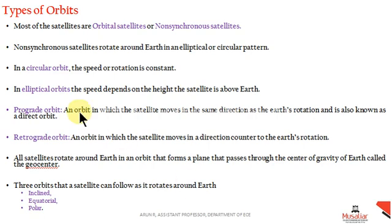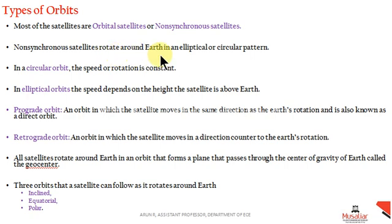In this video we will discuss the different types of orbits. Satellites are mainly classified into orbital satellites, also called non-synchronous satellites, which rotate around the earth in an elliptical or circular orbit. Let's look at the types of satellites and their parameters in orbital satellites.